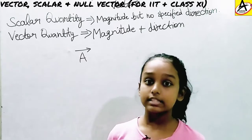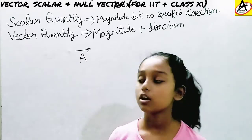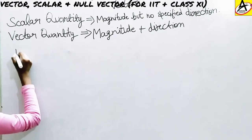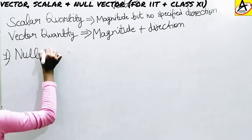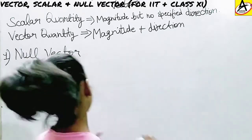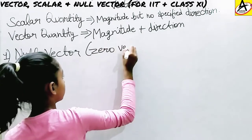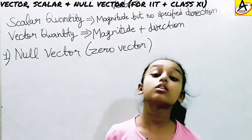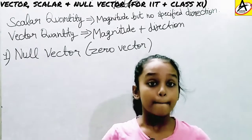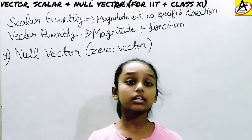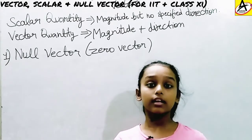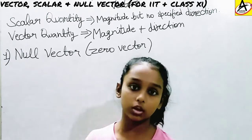Now I'm going to tell you about some types of vectors. The first one is the null vector. A null vector is also known as a zero vector. The definition of null vector is: a vector having magnitude equal to zero. That's why null vectors are called zero vectors — because their magnitude is always equal to zero.